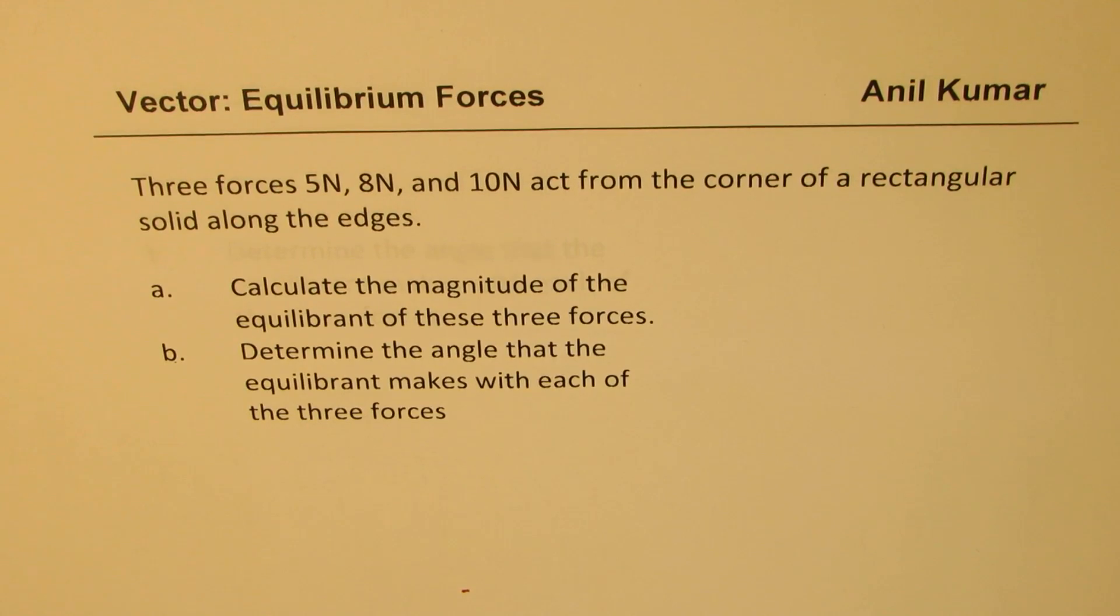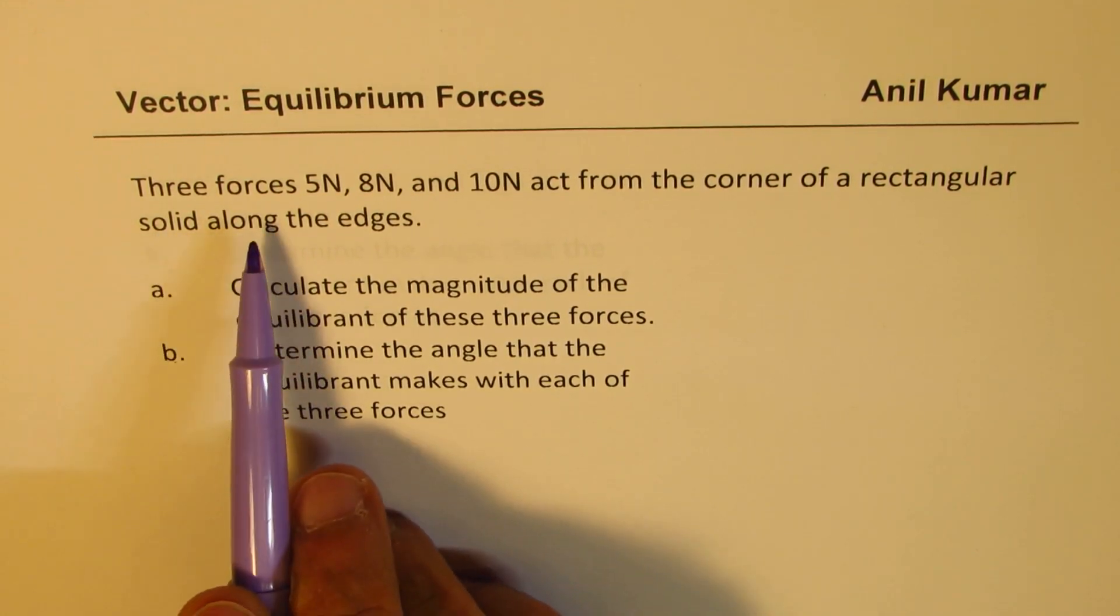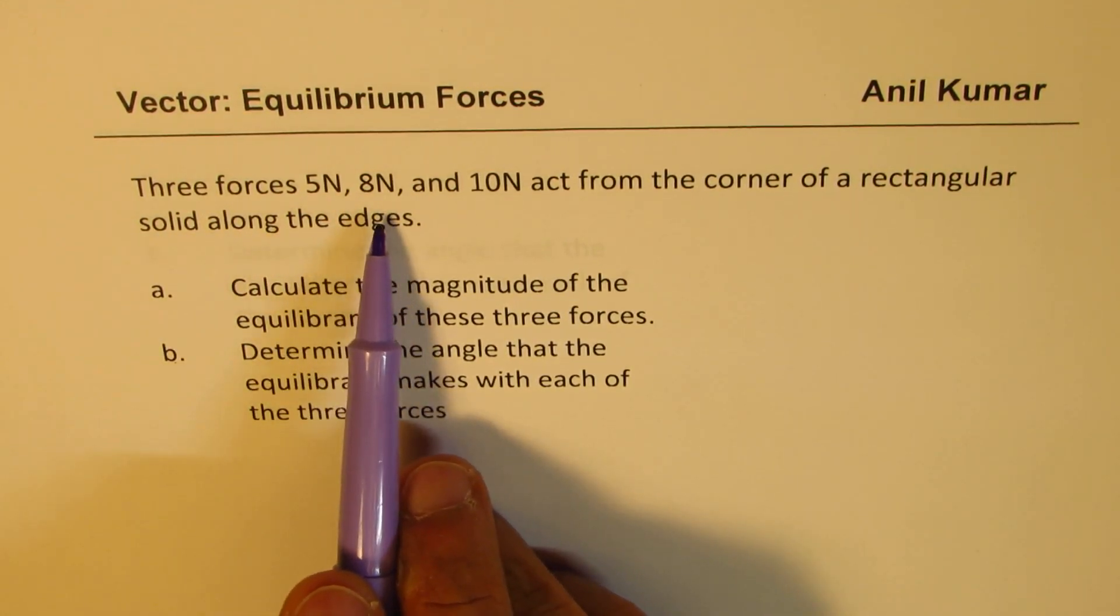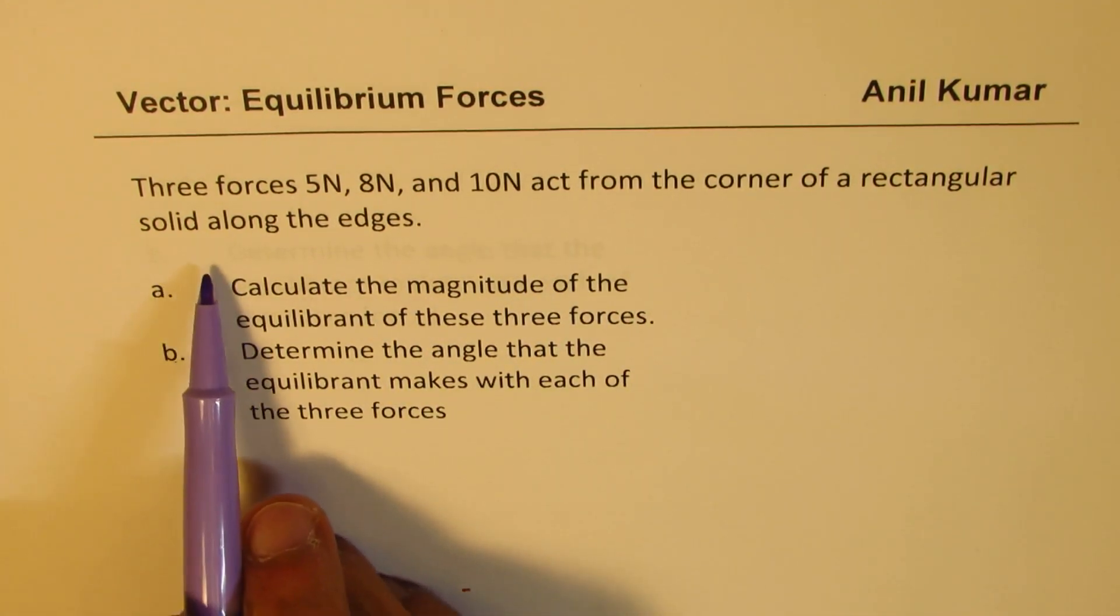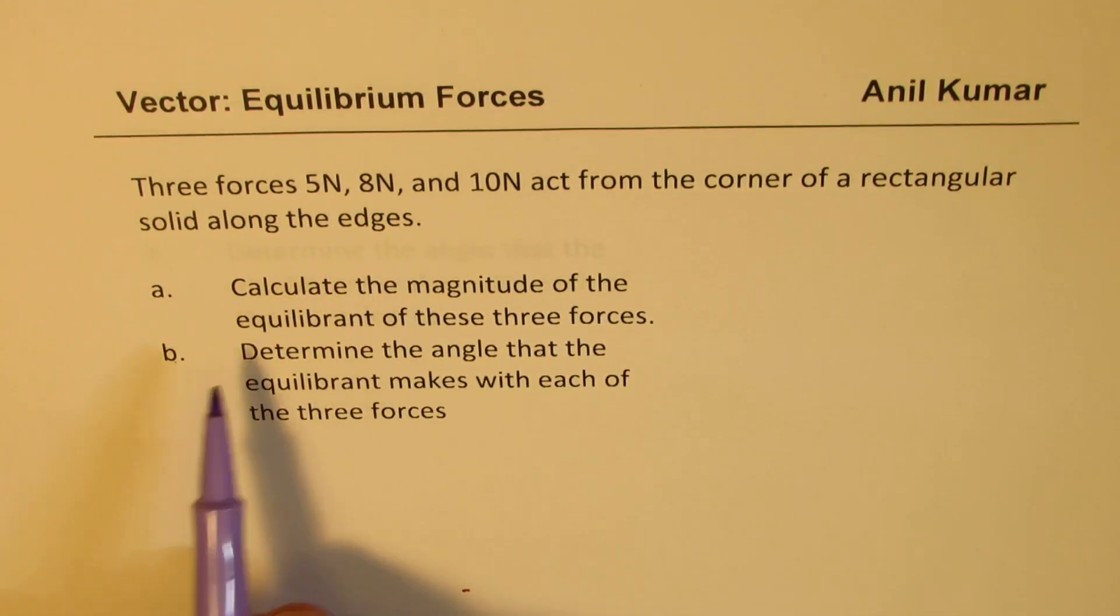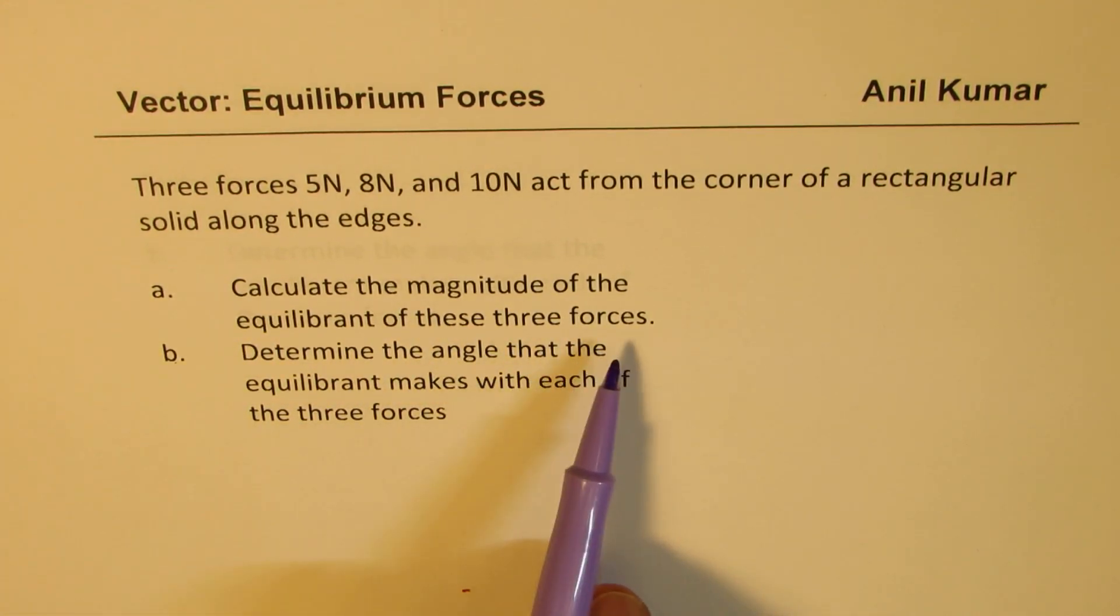The question here is: three forces 5 newtons, 8 newtons and 10 newtons act from the corner of a rectangular solid along the edges. Calculate the magnitude of the equilibrant of these three forces. Determine the angle that the equilibrant makes with each of the three forces.